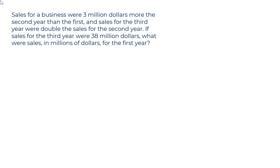We're told about three different years here, so let's write them out: year one, year two, year three, and then put our information underneath one, two, three.